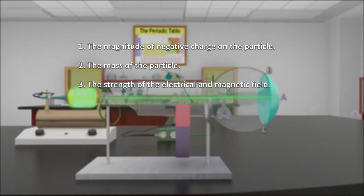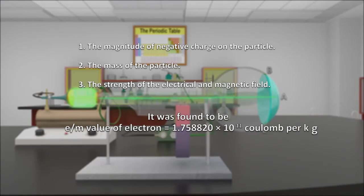Thompson calculated the charge to mass ratio of an electron by accurately measuring the deflection of electrons when varying strengths of electric and magnetic fields were applied. His efforts culminated in measuring the charge to mass ratio of an electron, which was found to be 1.758820 × 10^11 coulomb per kg.